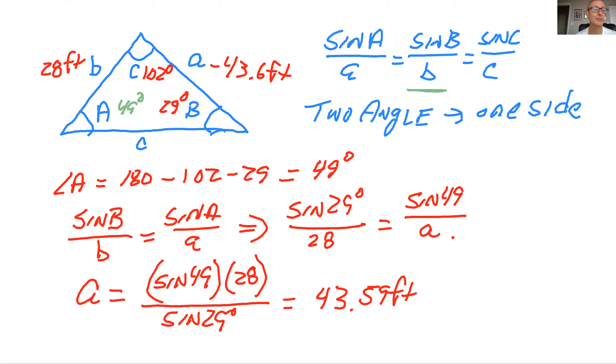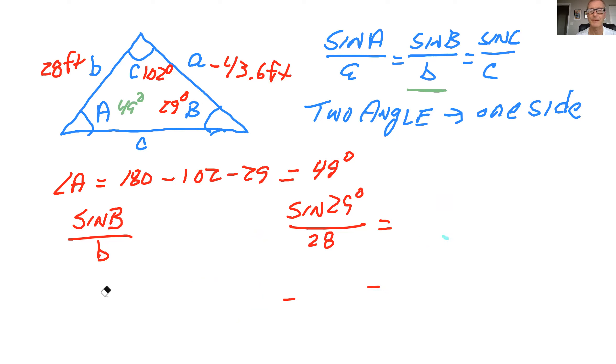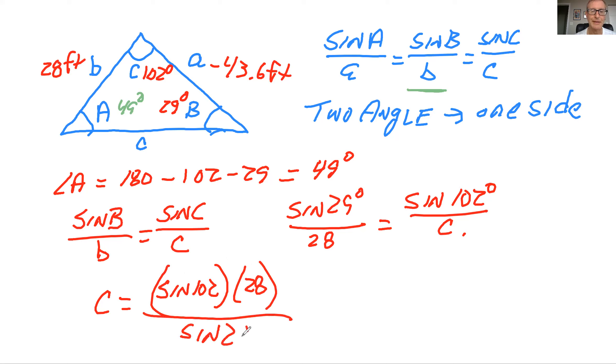Okay, so now what we're down with, we're down with, we still have little c to find. So now you have a bunch of options, but I usually just stick with the same one that we started with. And so if we stick with this one, we would do sine of B over little b equals sine of C over little c. And so when you set that one up, that's the one we already had. So what's angle C is 102 degrees, and then we'd have little c. And again, if you did the algebra, you bring c to the other side, flip this and go over. And so this would be sine of 102 times the 28 and then divided by sine of 29.